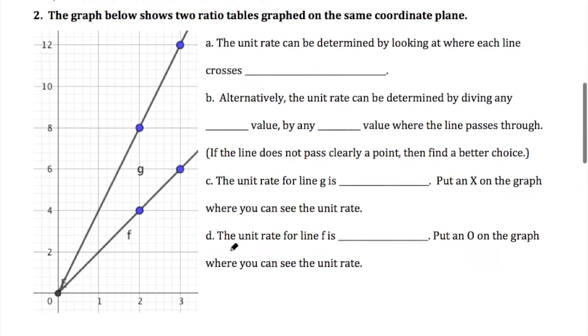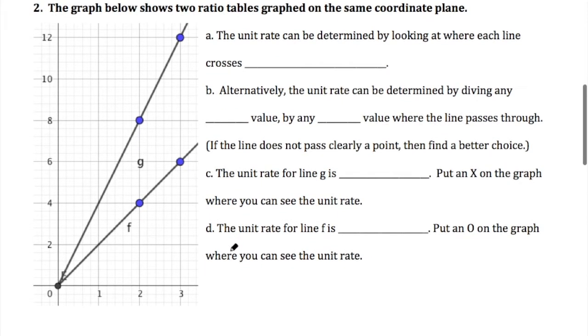So here's another example. Another thing we can do just from visually looking at the graphs of ratio tables is we can determine the unit rate. The unit rate can be found by looking at where each line crosses 1 on the x-axis. So if we look at 1 on the x-axis and we go up to where it crosses the lines, that's going to give us our unit rate.